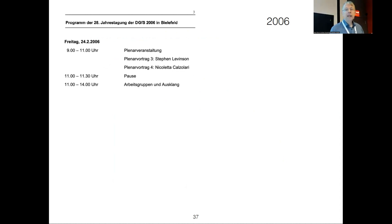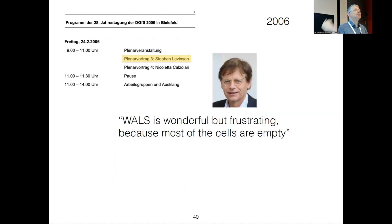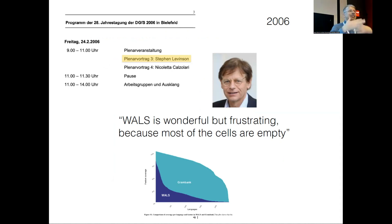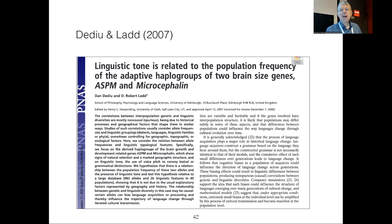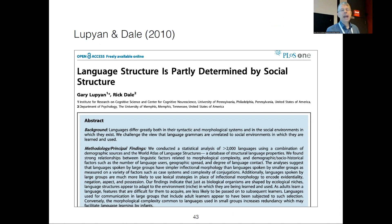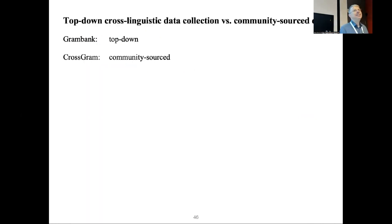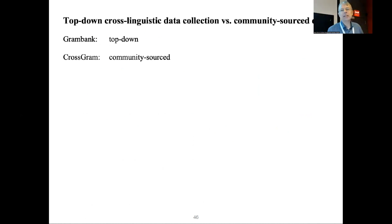Steve Levinson said WALS is wonderful, but it's frustrating because most of the cells are empty. I was a bit frustrated about this — is the glass half full or half empty? But I could see the different perspective. Now the glass is no longer half empty but half full, yet it's still missing data. We've had quite a few papers using WALS data — Lupyan and Dale, Atkinson 2011, Dunn et al. 2011. But we've also seen that some of these papers are perhaps not as robust as we might have hoped.